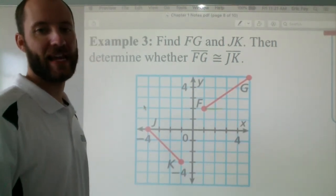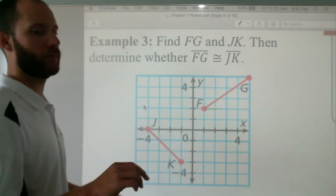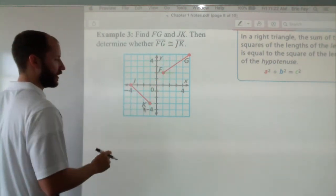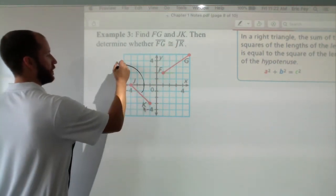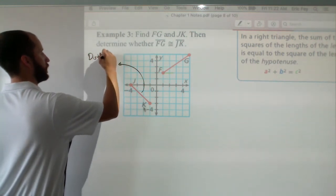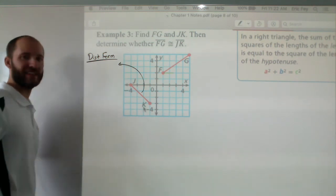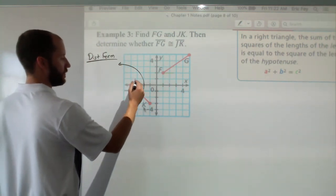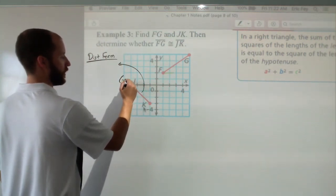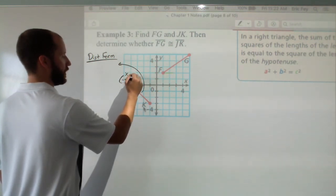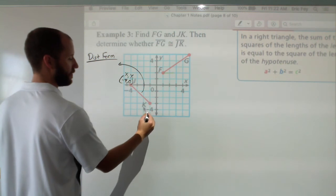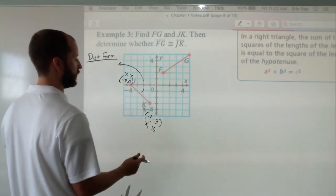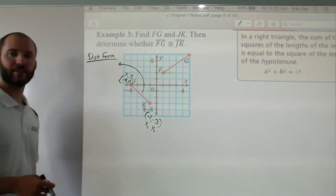So find JK and FG and then determine whether they are congruent, so whether their measures are equal. So for JK, let's use the distance formula. The distance formula requires you to use x1, y1, x2, y2. So we have J, which is at negative 4, 0. That'll be x1 and y1. We have K, which is at negative 1, negative 3. That'll be x2 and y2. So go ahead, use this information, plug it into the distance formula, see what you get.